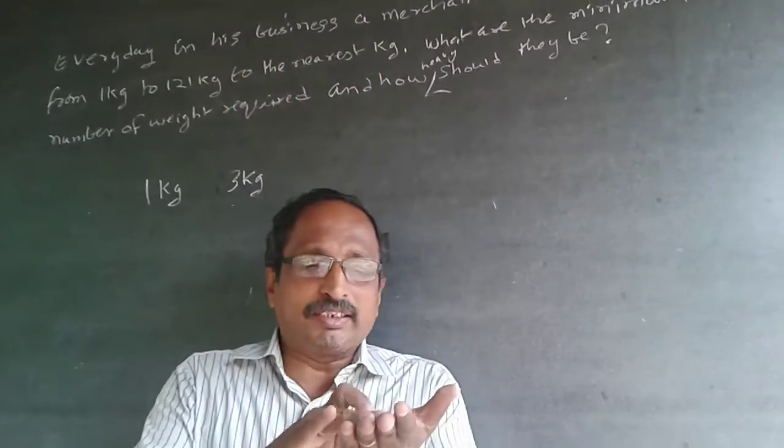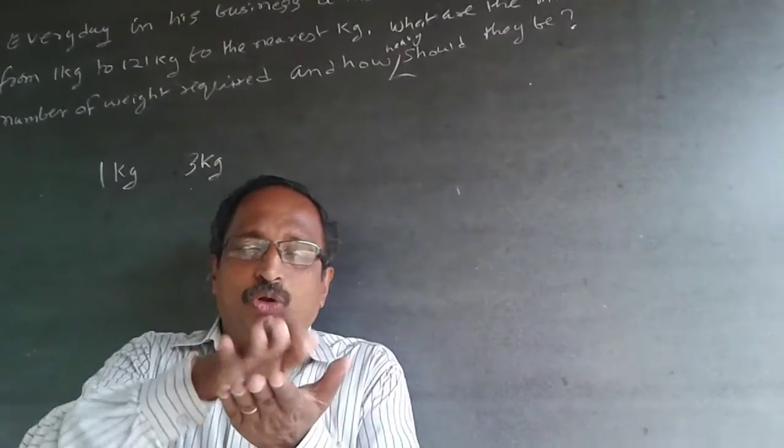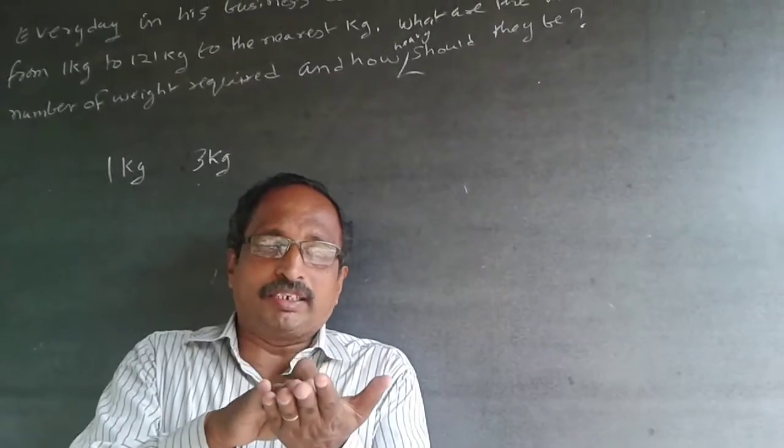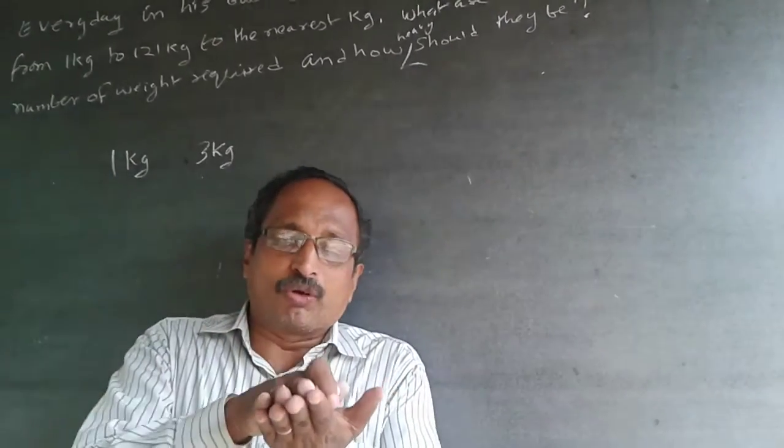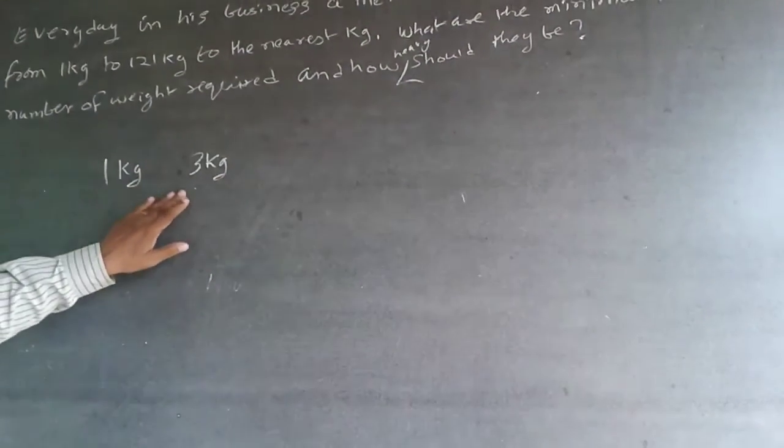So what will happen is, I'll put one kg in this pan and three kg in this pan. Now the gap is two kg. I can put two kg articles here. I will put one kg weight here, two kg, three kg weight here, so I can give two kg, then three can be given, four can be given.